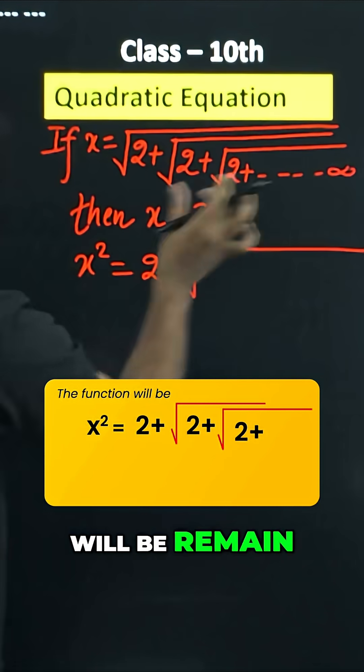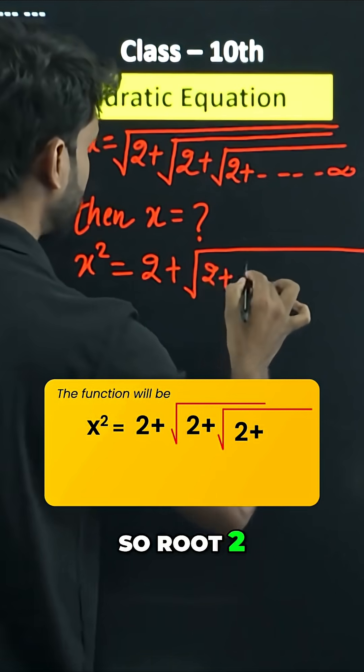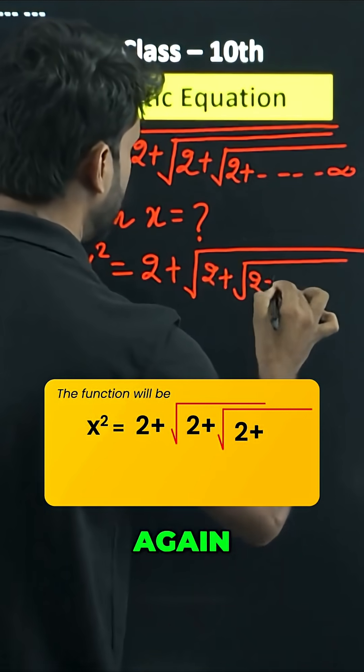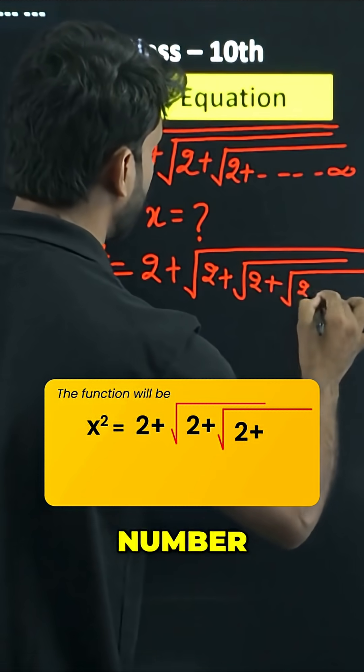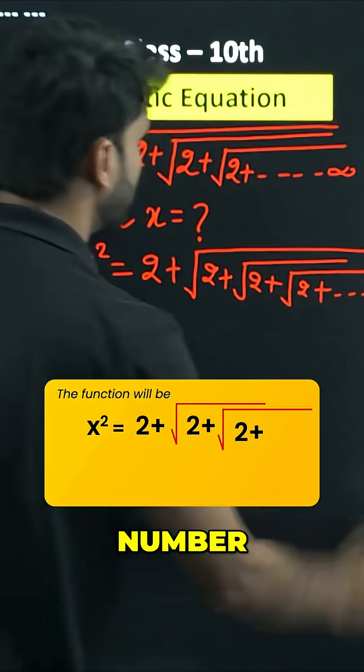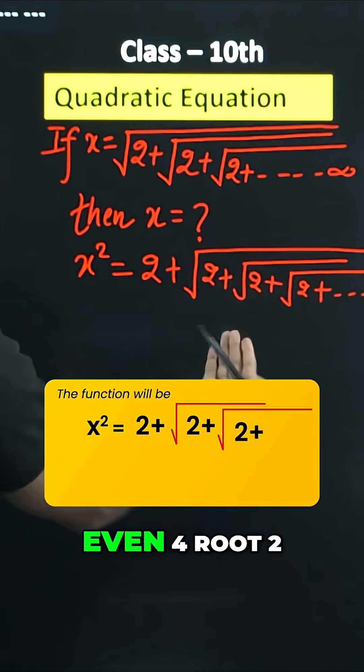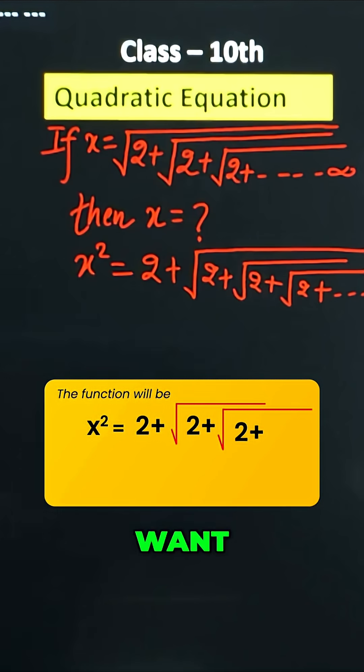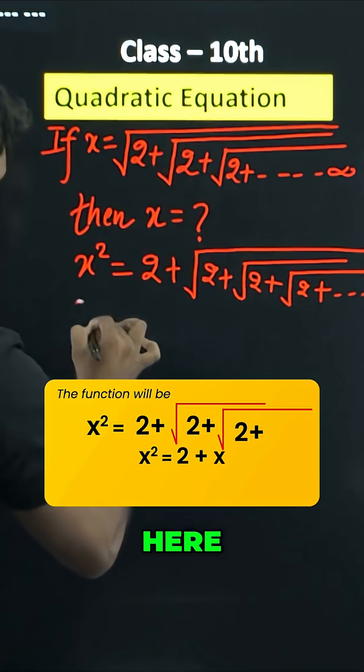These roots will remain the same: root 2 plus root 2. I am writing one more root 2 because the number of root 2s is very large, till infinity. We can write even 4 root 2, 5 root 2, whatever we want. So look at the format here.